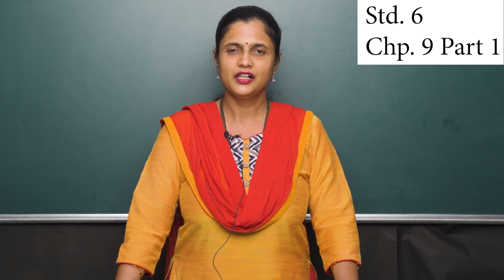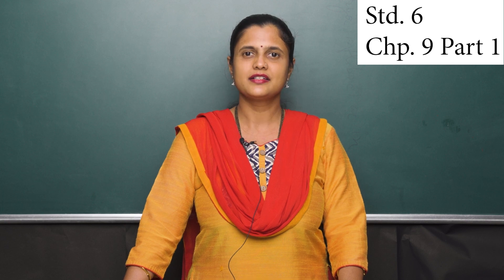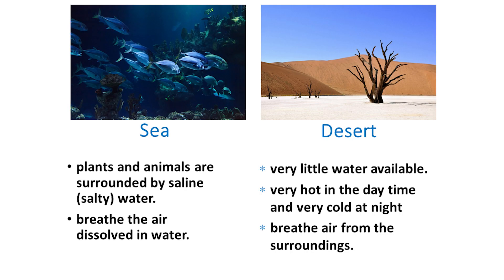For example, if we take two such surroundings such as a sea and a desert, we find that in a sea, plants and animals are surrounded by saline water. Saline water means salty water, and most of them use the air dissolved in water. Whereas there is very little water available in the desert — it is very hot at daytime and very cold during the night. The plants and animals live on the desert soil and breathe the air from the surroundings. So we can say that sea and desert are two very different surroundings, and we find very different organisms in these two regions.